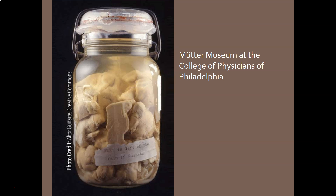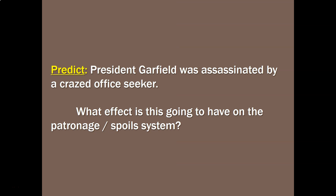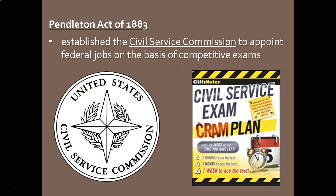Guiteau was, again, straight-up crazy. In fact, they actually preserved his brain, or at least part of it, and it's on display at a museum in Philadelphia if you want to go see an assassin's brain. Now, President Garfield had been killed by this crazy office seeker caught up in the patronage system — so what effect is this going to have? Obviously, the effect is: we've got to do something to reel in this patronage system before other people are killed as well.